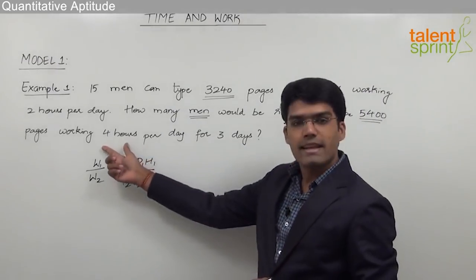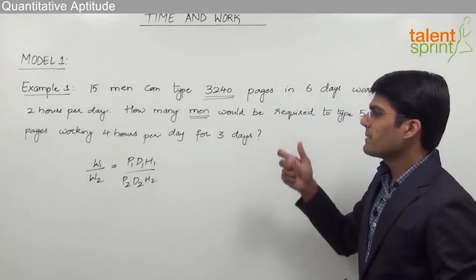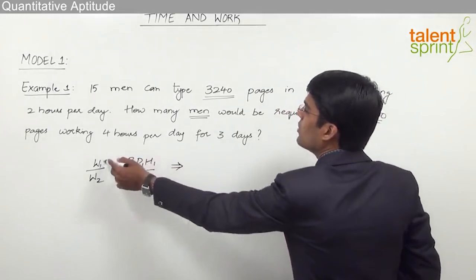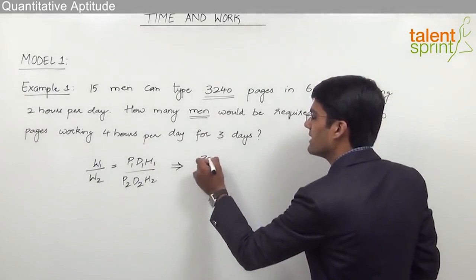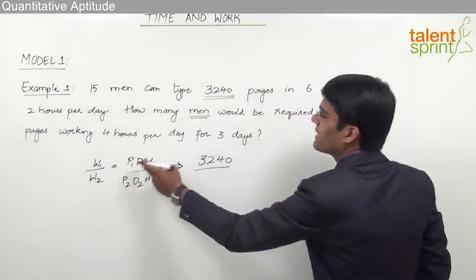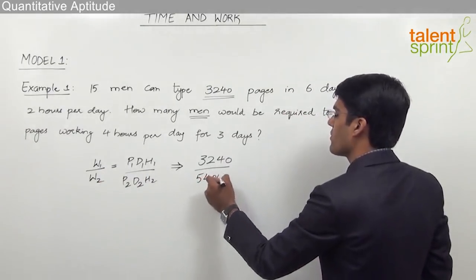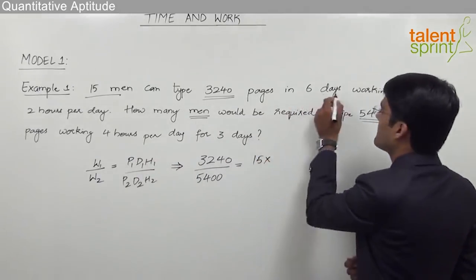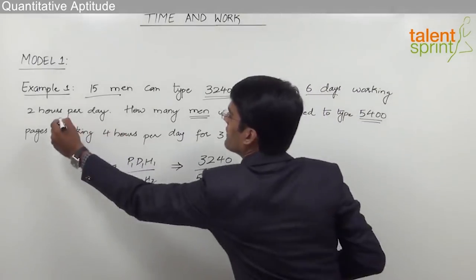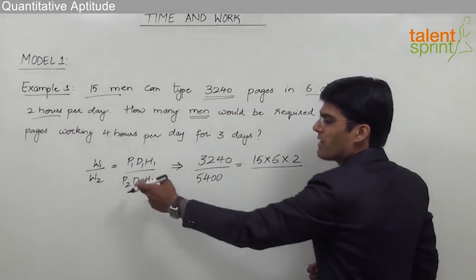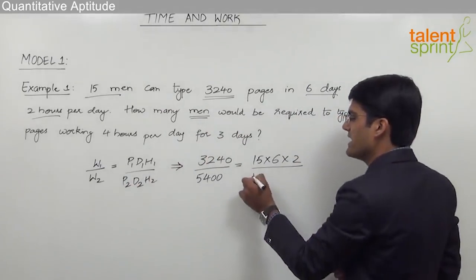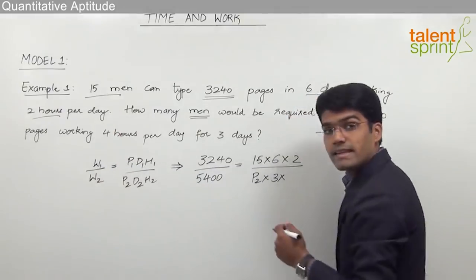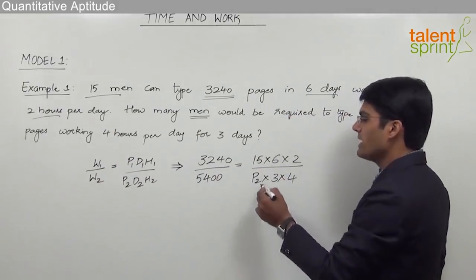In the second case, H2 = 4 hours per day and D2 = 3 days. Substituting into the equation W1/W2 = P1D1H1 / P2D2H2, we get 3240/5400 = (15 × 6 × 2) / (P2 × 3 × 4). We now simplify to find P2, the number of men required in the second case.